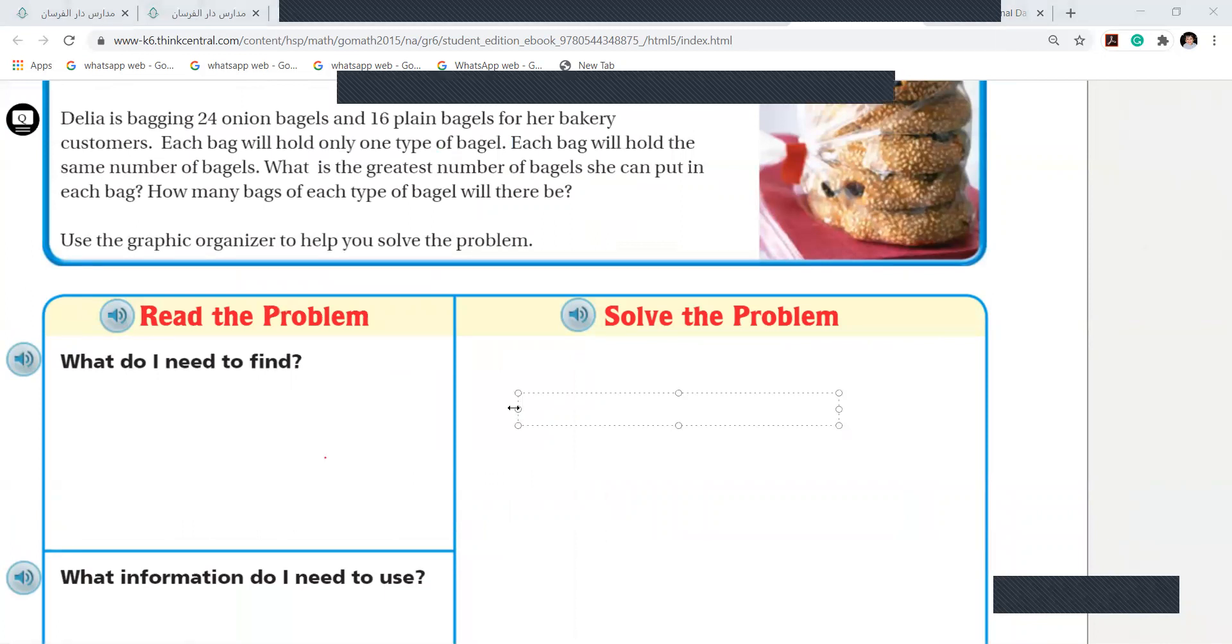First of all, total bagels. Delia is bagging 24 onion bagels and 16 plain bagels. So let us write total bagels first. Total bagels, how much? Onion and plain. How much? How much is for onion and how much is for plain? First of all, total bagels. Tell me, how much is for onion? First, understand, then I'll give you time to write. How much is for plain? And then how much is for plain? 16. 16. Yeah. When you find the GCF, GCF of 24 and 16, I get GCF equals... You know how to find it out. I'm not finding it out. I get 8.